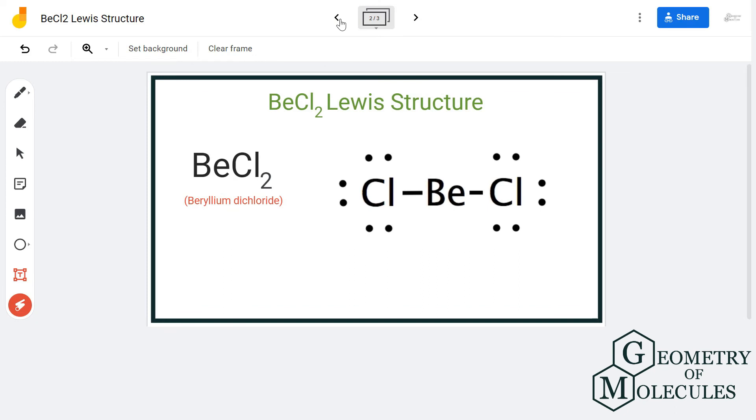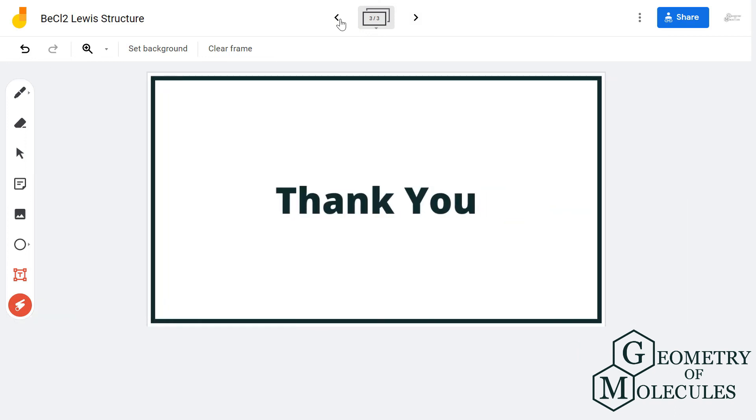This is the Lewis structure for BeCl2, in which the beryllium atom forms a single bond with both chlorine atoms. It has a linear molecular geometry. For more videos on molecular geometry, Lewis structures, and polarity of molecules, subscribe to our channel. Thank you for watching.